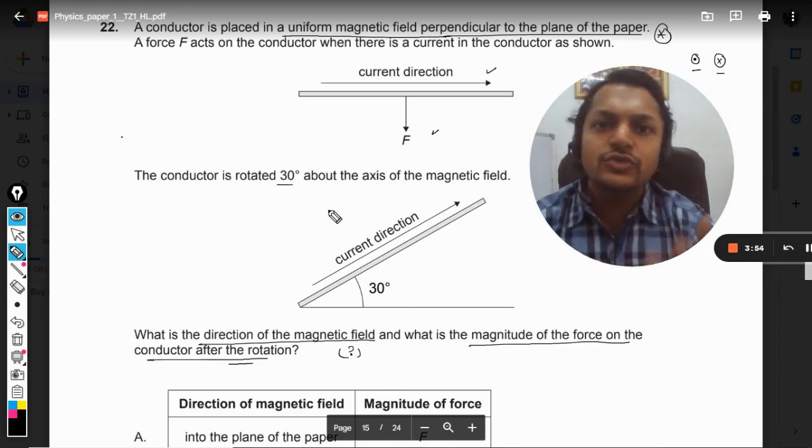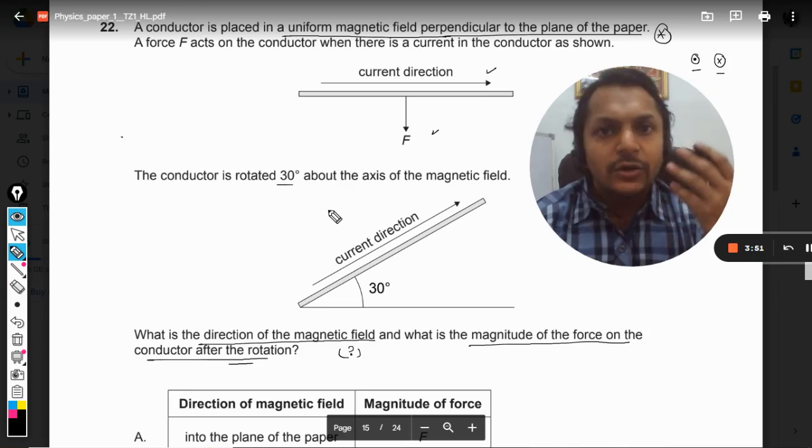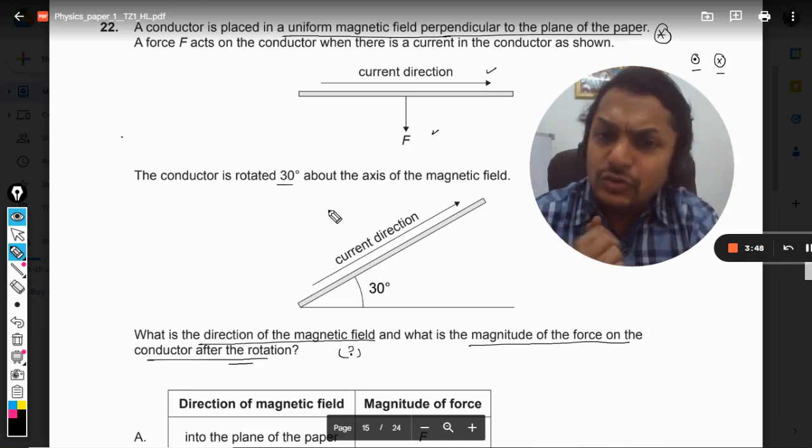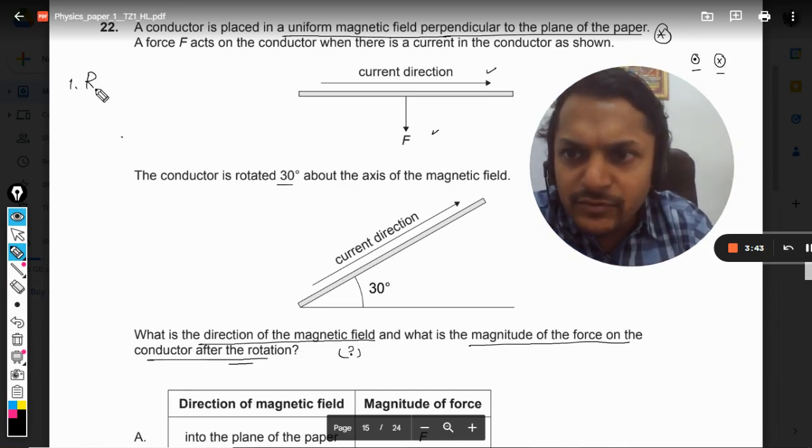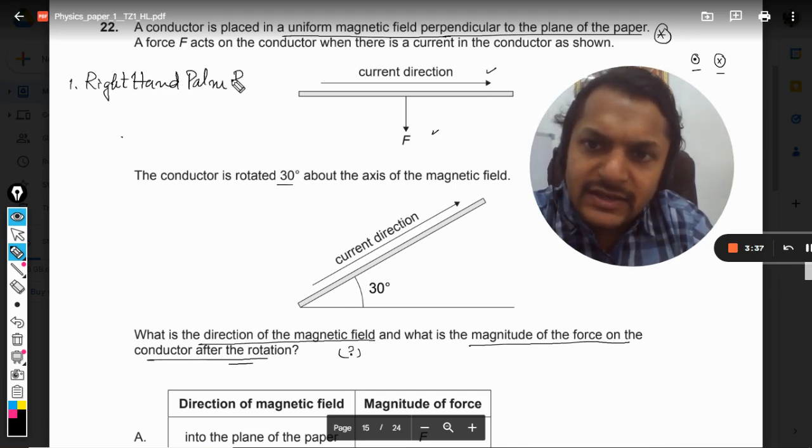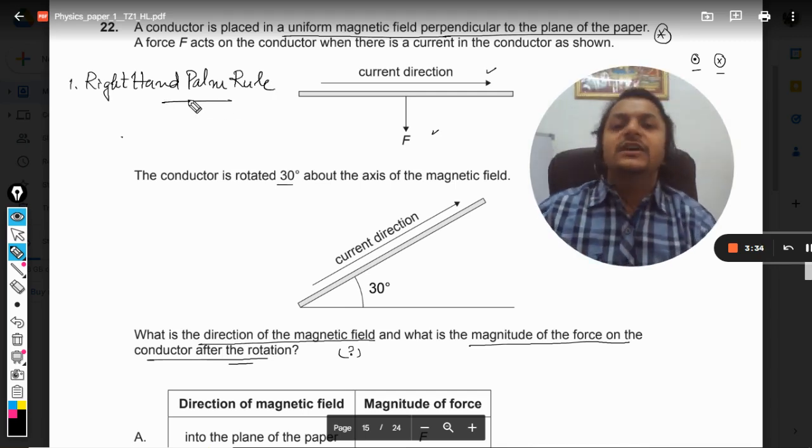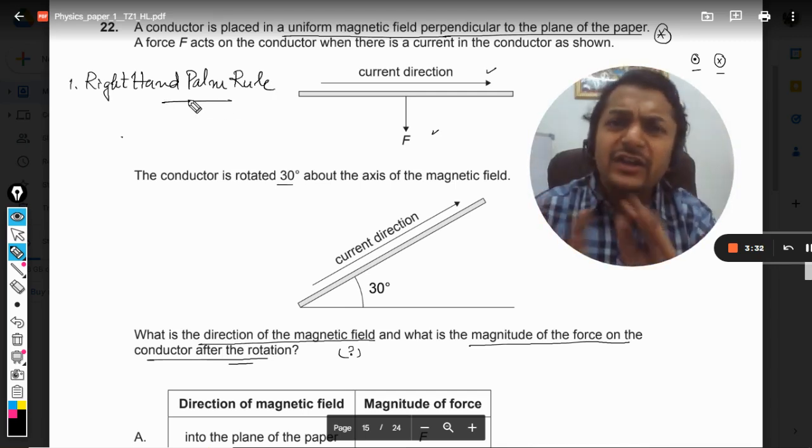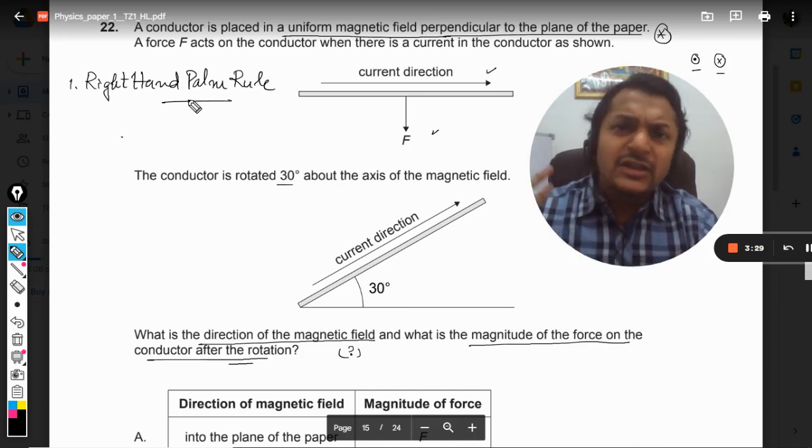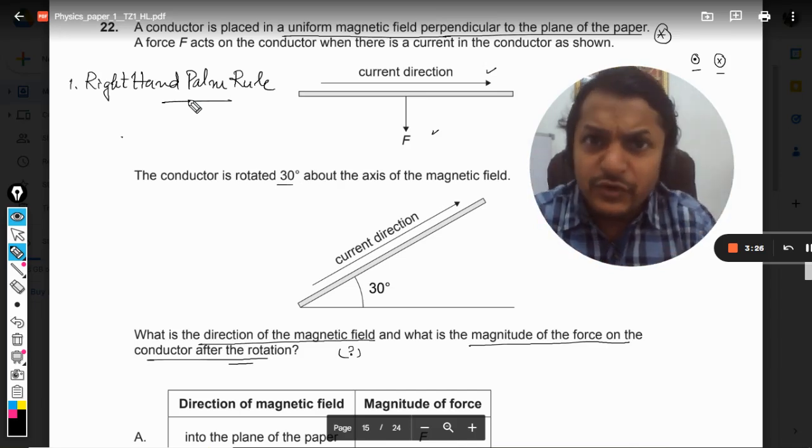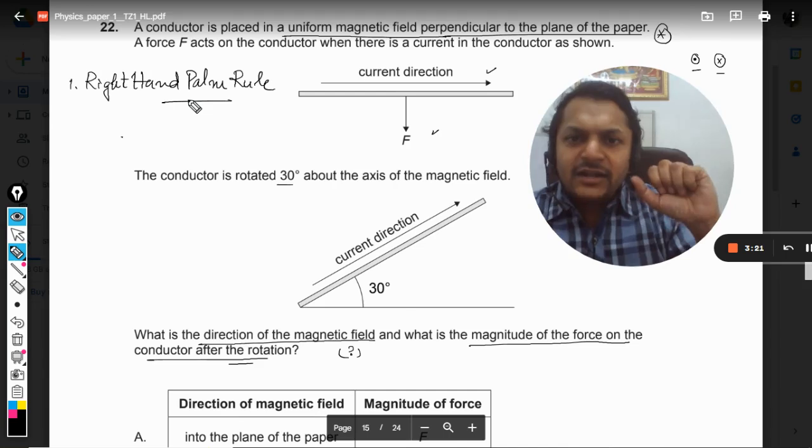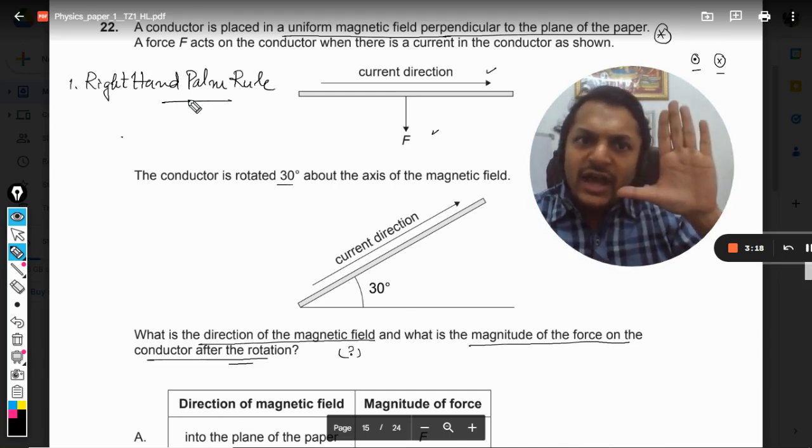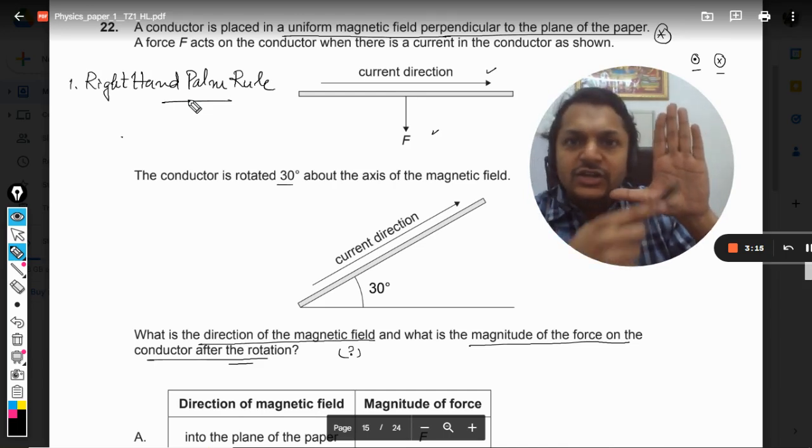First of all, we should find the direction of the magnetic field, and for that you would be using your rules which are utilized to find the direction. So there are many such rules, and the rule that I use is right hand palm rule. Why I prefer this rule is because this is fairly simple, very simple compared to the other rules. The other rules are quite confusing. So in this, what we do is we use the right hand.